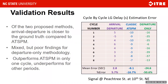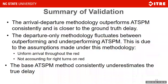In general, our research found that we need to use both detectors — the two-detector arrival-departure approach — to get a much better estimate of approach delay, within 5 to 10% of the actual field delay. Summarizing the validation: the arrival-departure method outperformed ATSPM consistently. The departure-only method mostly failed because of the assumption of uniform arrival throughout the red and does not account for right turns during red. The base ATSPM always consistently underestimated the true delay.